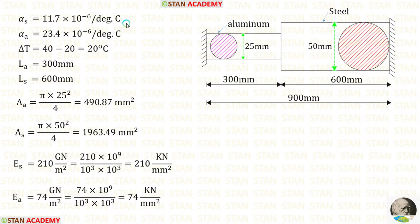Now let us make the given data. Alpha S and Alpha A are given. Delta T is equal to 40 minus 20, we will get 20. Length of aluminum is 300 mm. Length of steel is 600 mm.